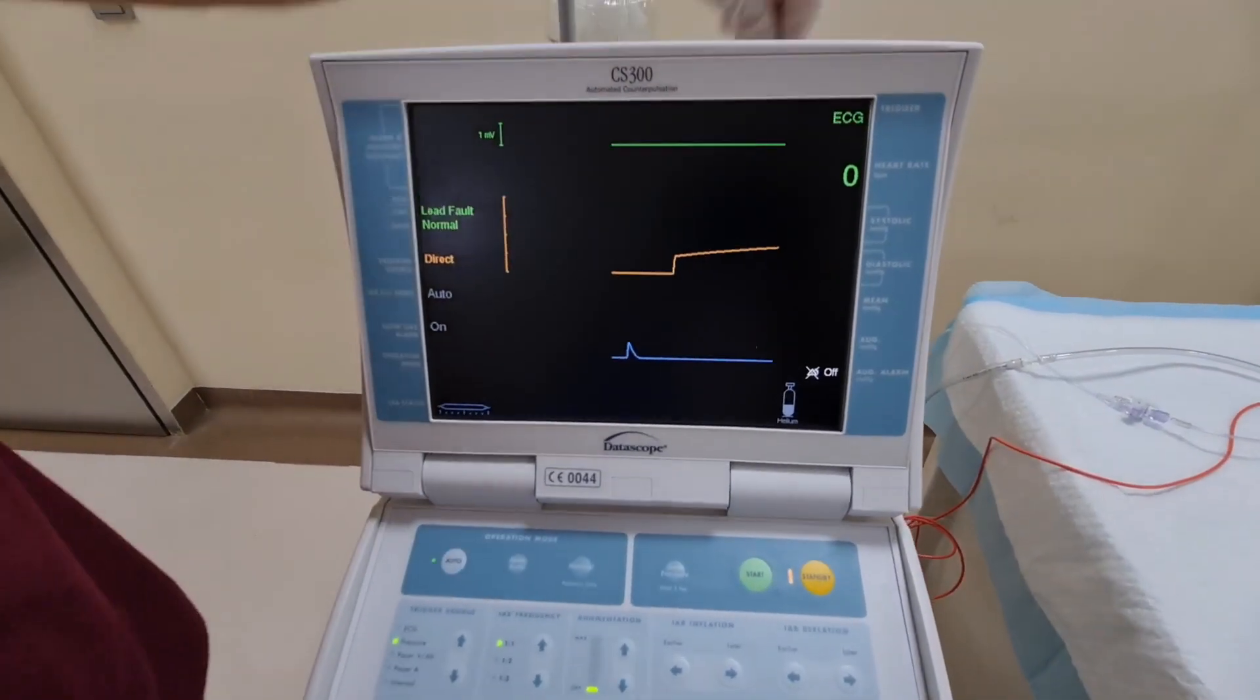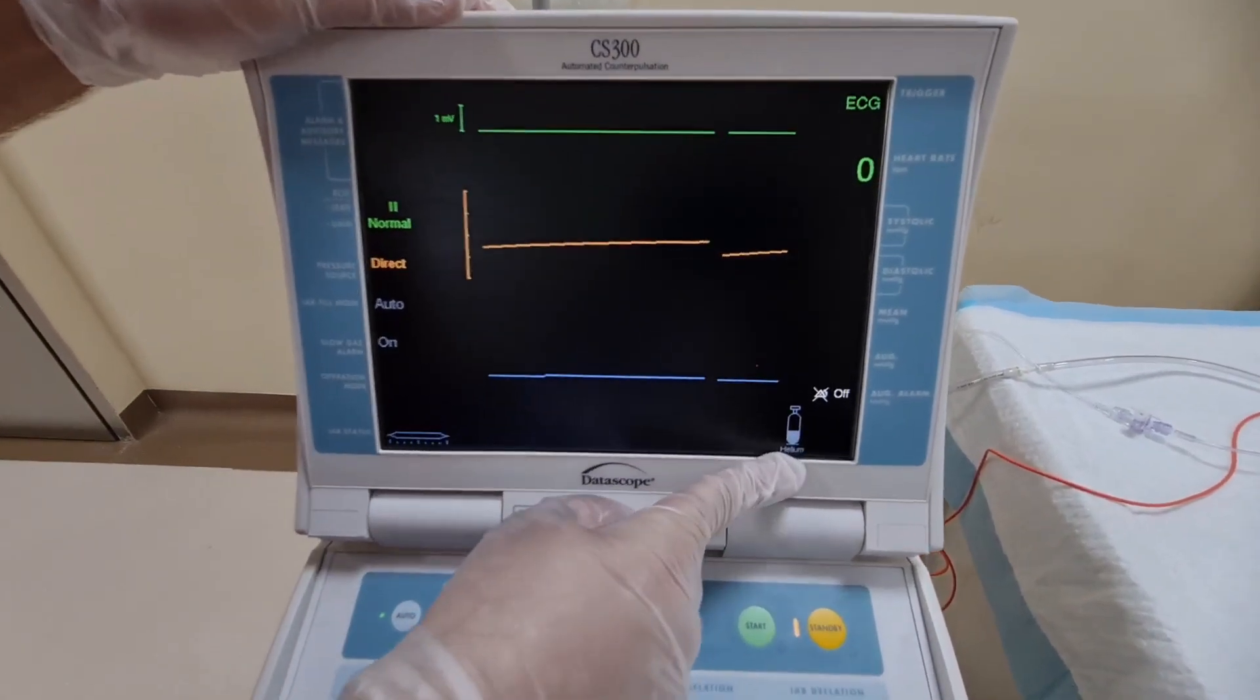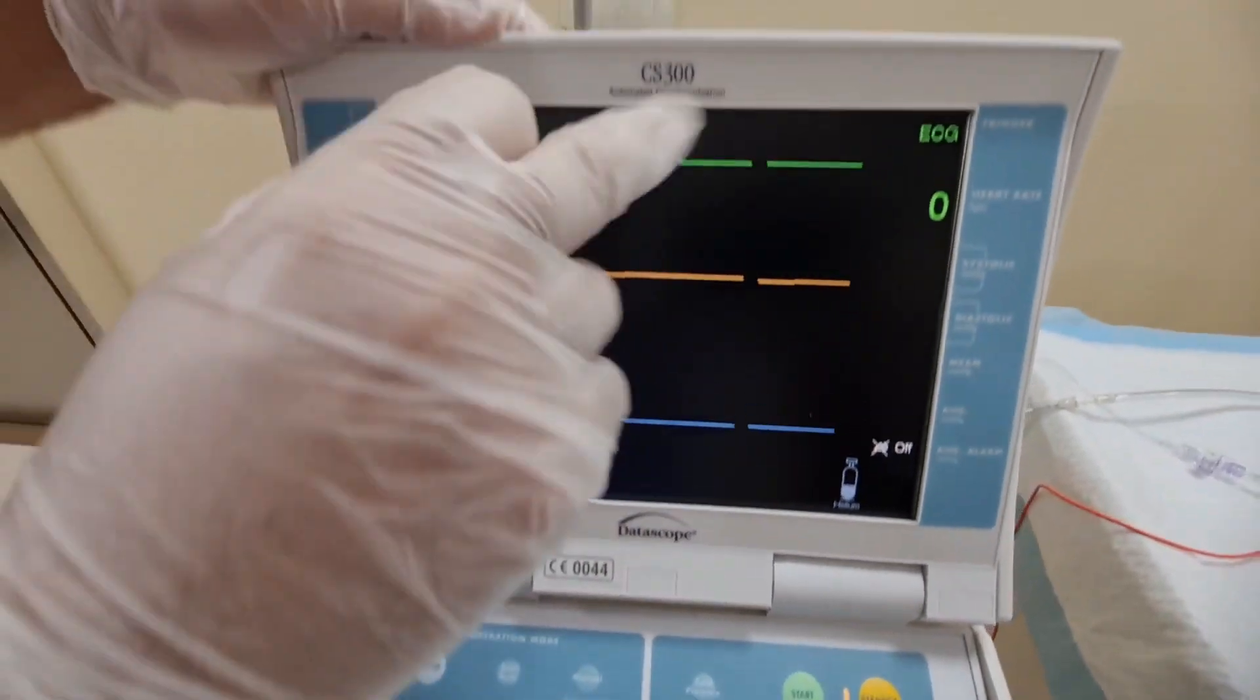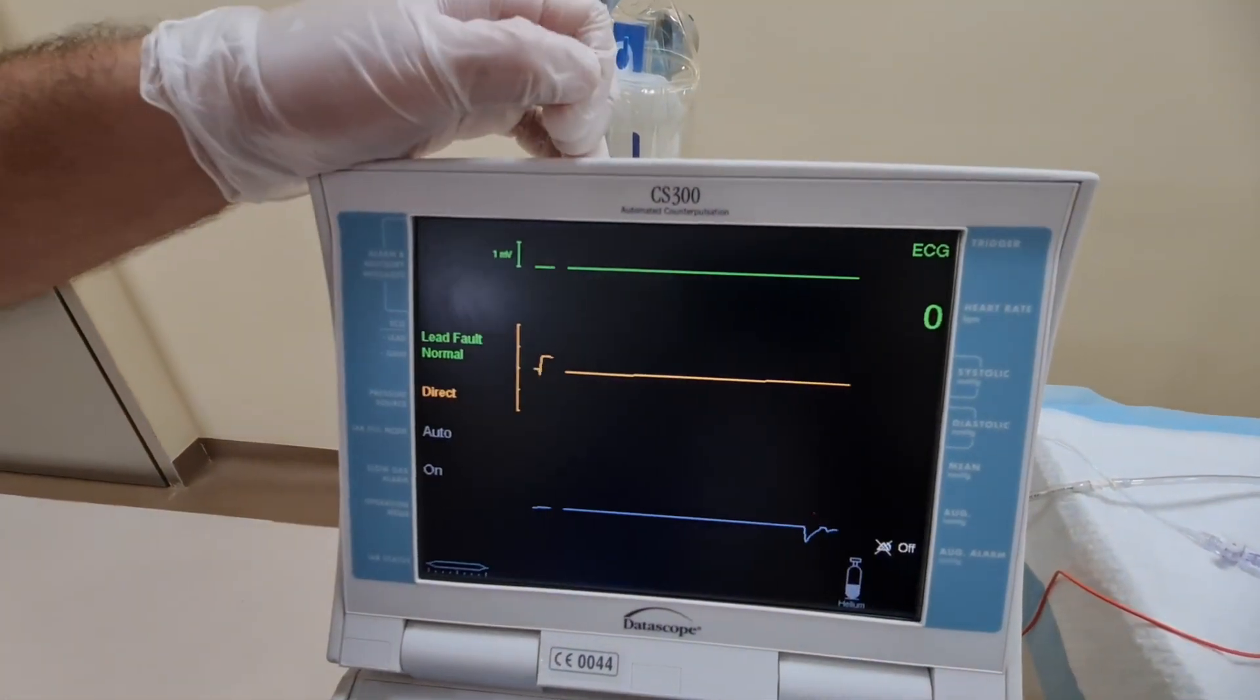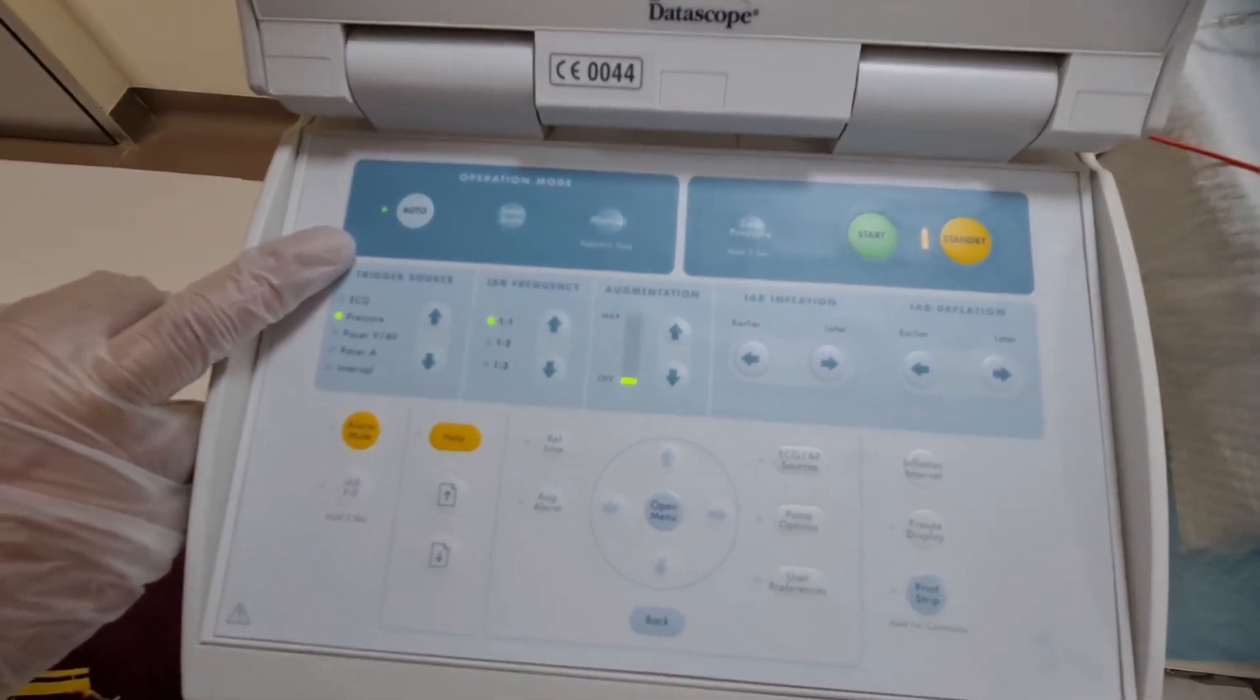After we connect all the connections properly, you will see the screen. Here you can see the gauge for the helium gas in the cylinder, and here you will see the pressure. If it is directly connected to the patient, you will see the complex pressure waveform, so that we can either trigger it by the pressure or it will automatically be converted to the ECG.